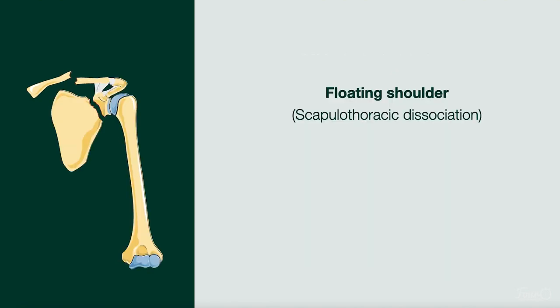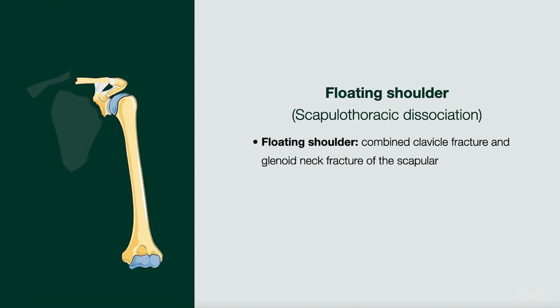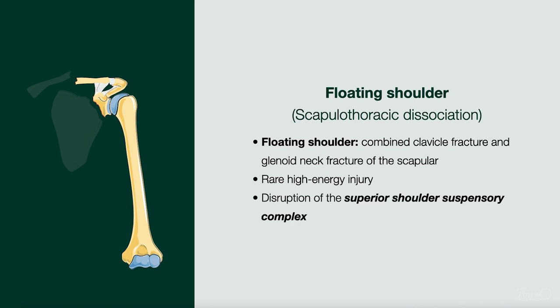Now to a more complex injury: floating shoulder, which is seen in the illustration. Floating shoulder is the combined clavicle fracture and scapular fracture of the glenoid neck. It is a rare high energy injury which may occur from an MVA, fall from a height, or gunshot. Key characteristics include disruption of the superior shoulder suspensory complex, which includes the middle and distal clavicle, the acromion, the coracoid, the acromioclavicular ligament, the coracoclavicular ligament, and the glenoid. One must assess for other associated injuries, which may include pneumothorax, neurovascular injuries, and muscular injury.